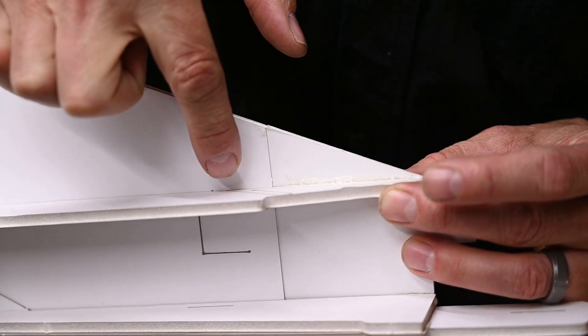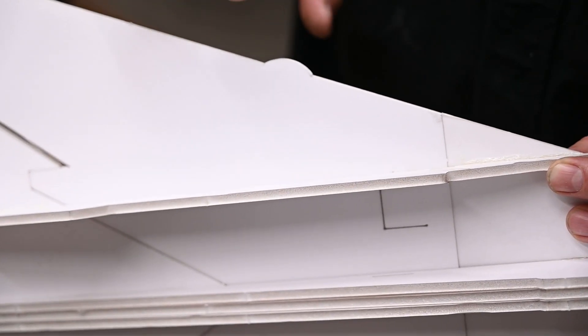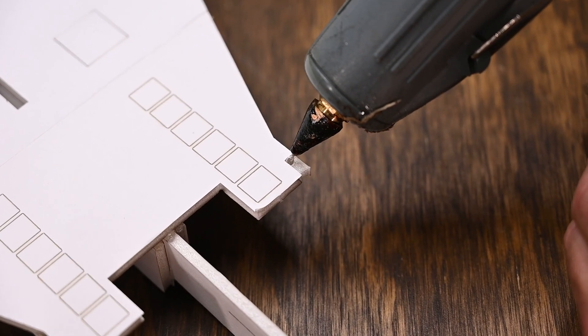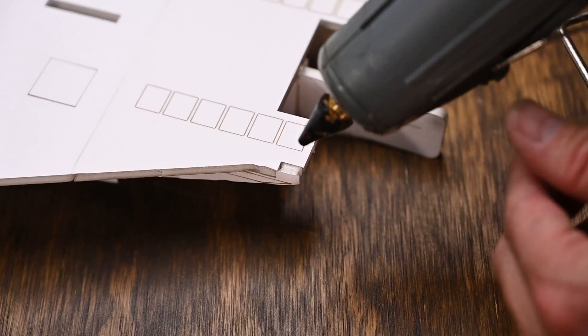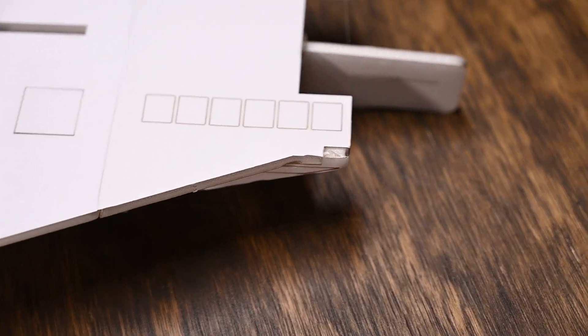You'll notice that I'm not adding any glue where the nacelle meets the actual wing. Do the same thing on the other side. I also like putting a very small drop of glue right here. Let that cool, then we're going to install our nose.